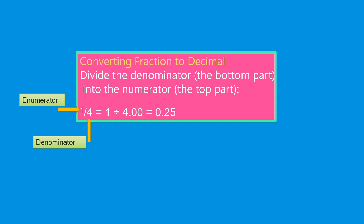Next question. Converting fraction to decimal. Divide the denominator, the bottom part, into the numerator, the top part. This is the numerator and this is the denominator. So 1 divided by 4 equals 0.25.